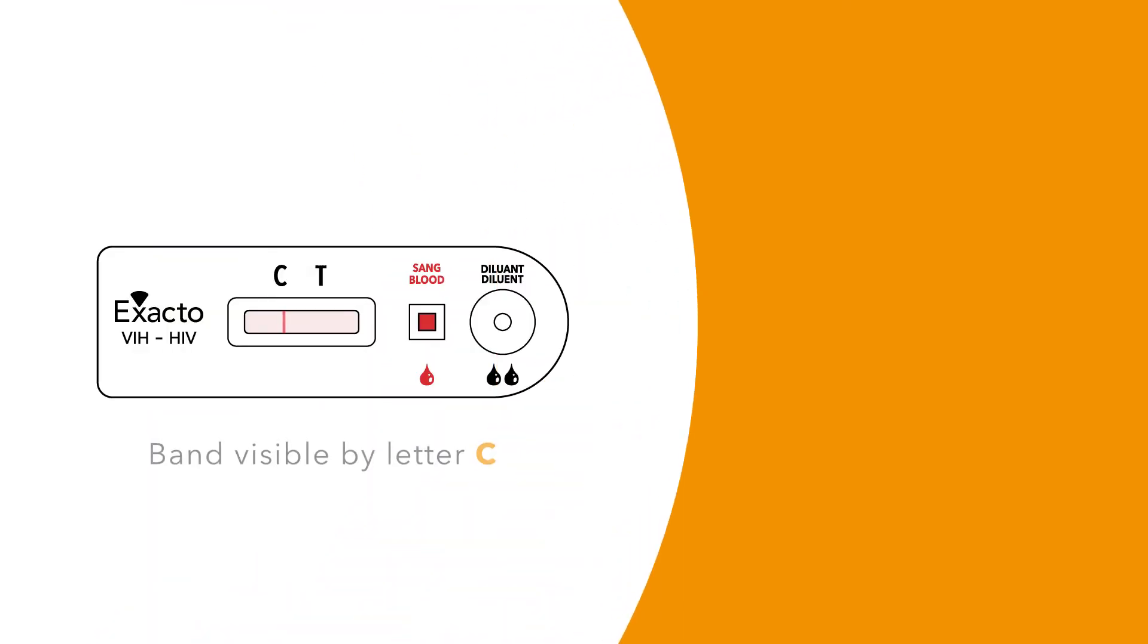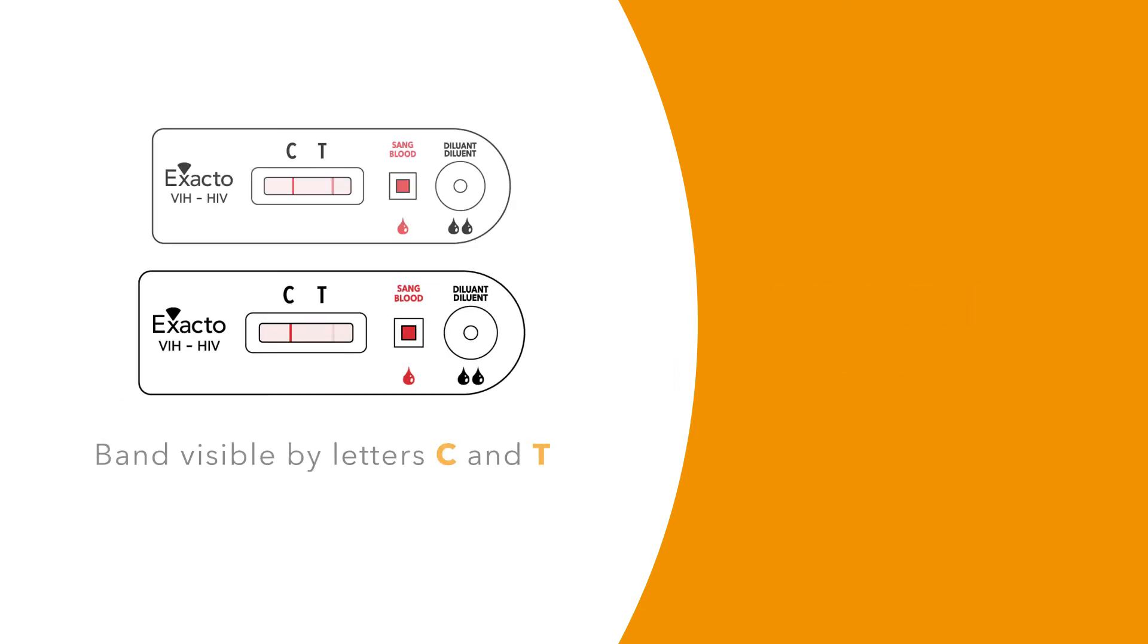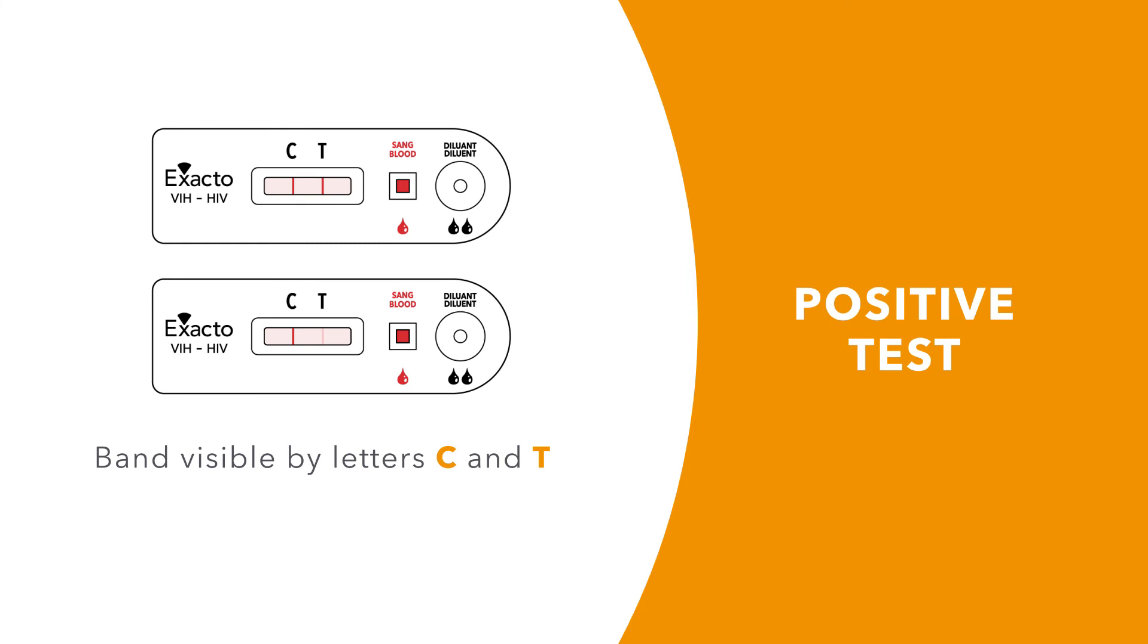If a band appears by the letter C, but not by the letter T, the test is negative. If a band appears by the letter C and by the letter T, the test is likely positive.